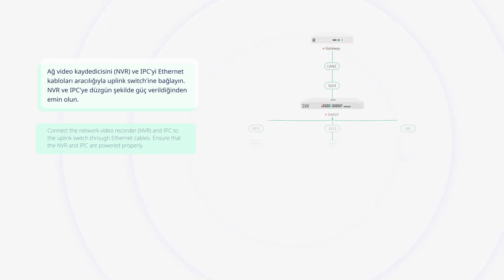Connect the network video recorder and IPC to the uplink switch through Ethernet cables. Ensure that the NVR and IPC are powered properly.